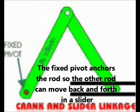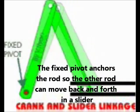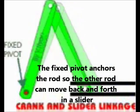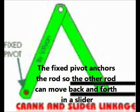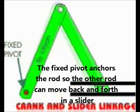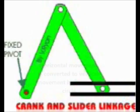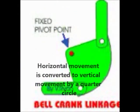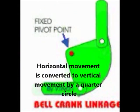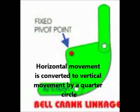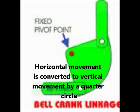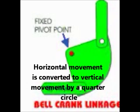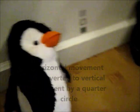The fixed pivot — shown as the red dot — anchors the linkage to one place so it doesn't move. The bell crank linkage allows horizontal movement to change into vertical movement, and it also works the other way around: vertical movement can change to horizontal.